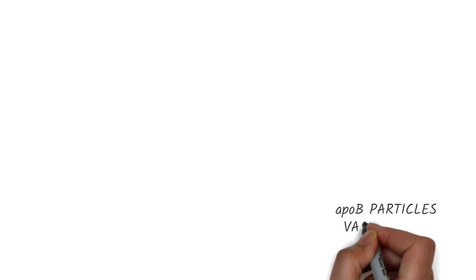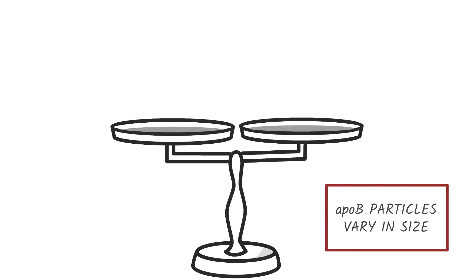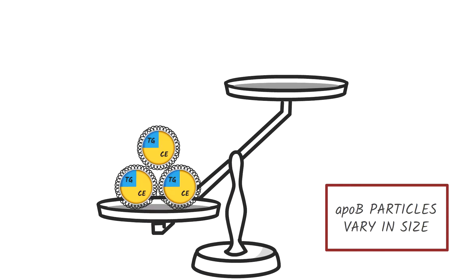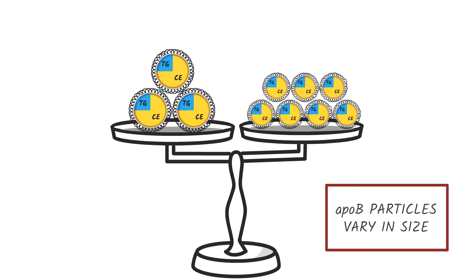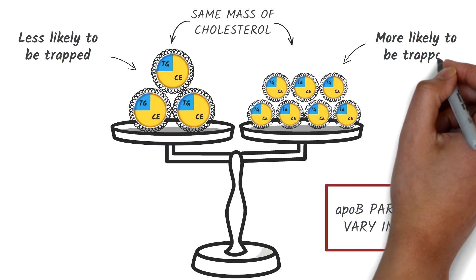The problem with this approach is that ApoB particles vary in size, meaning that a given mass of LDL-C or triglycerides can come from a small number of large particles or from a larger number of smaller particles. And here's an important point: while larger particles deposit more cholesterol into the arterial wall, they're less likely to get trapped. Smaller particles have less cholesterol, but they are more likely to become trapped.